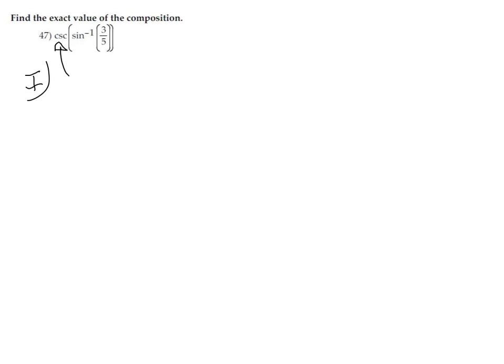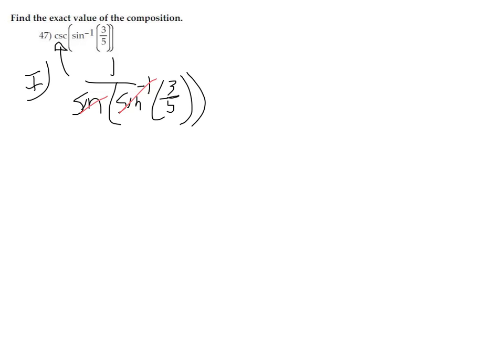Next question: find the exact value of the composition cosecant of arc sine of three-fifths. There are a couple of ways we can work this out — three distinct possibilities. One way is to deal with cosecant: we can write that cosecant is 1 over sine, with the inside unchanged. Then the sine and the arc sine reduce, giving us 1 over three-fifths, which is five-thirds.